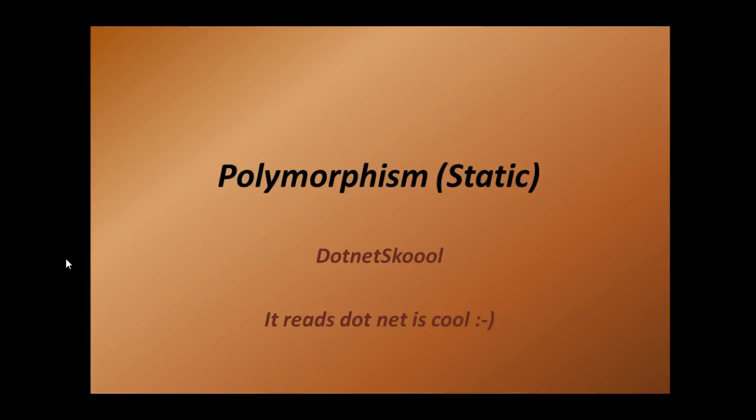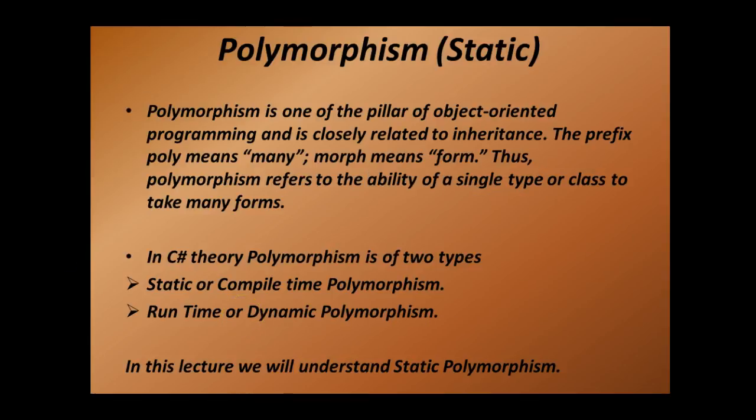In this lecture we will understand what is static polymorphism. Before understanding static polymorphism we should first look into the definition of polymorphism. Polymorphism is one of the pillars of object oriented programming and is closely related to inheritance. The prefix poly means many and morph means form. Thus polymorphism refers to the ability of a single type or class to take many forms. In C# polymorphism is of two types: static or compile time polymorphism, and runtime or dynamic polymorphism.